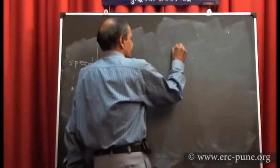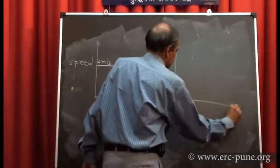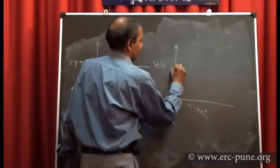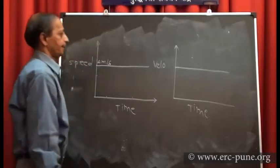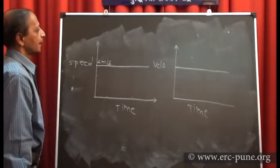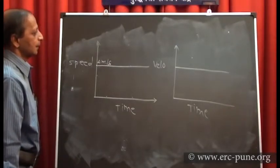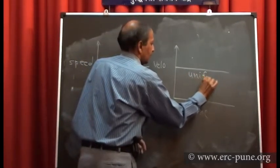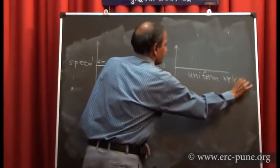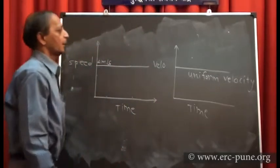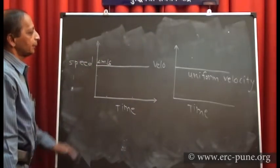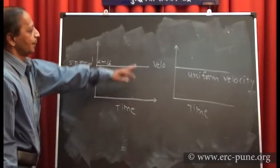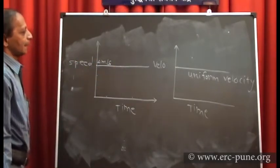If instead of speed you plot a graph of velocity versus time and it is parallel to the time axis, the velocity is not changing. The conclusion is that the body is moving with uniform velocity. It is not accelerated; it is moving with constant speed along a straight line.